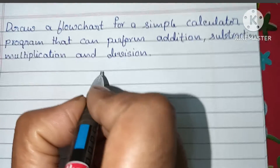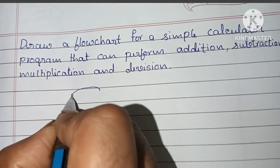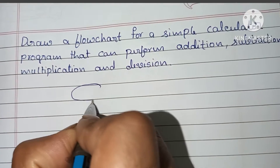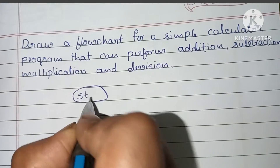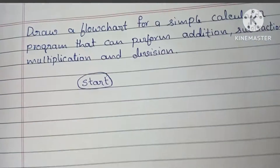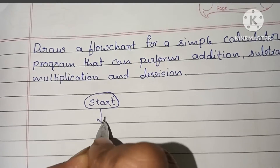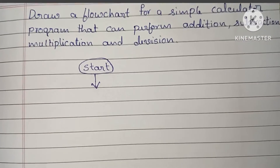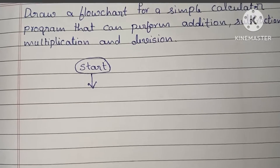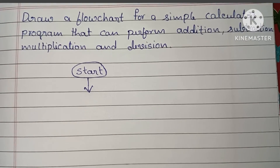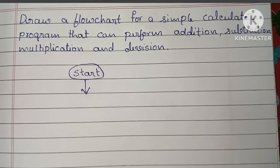A flowchart always starts with a start statement. It is written within an oval shape, so we have to draw an oval shape and write the start statement inside it. The next step is to read two variables, a and b, and the operation we are going to perform — whether it is addition, subtraction, multiplication, or division.